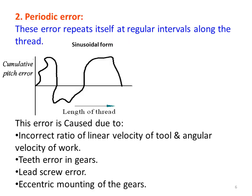The next type is periodic error. As the name suggests, periodic errors repeat themselves at regular intervals along the thread. When plotted on a graph, periodic pitch error attains highs and lows in a sinusoidal form. This error is caused due to: incorrect ratio of linear velocity of tool and angular velocity of work, teeth errors in gears, lead screw error, and eccentric mounting of gears.